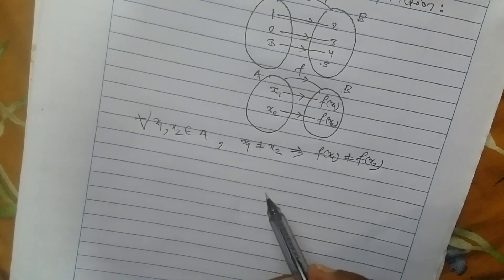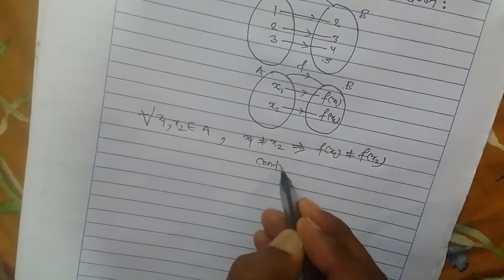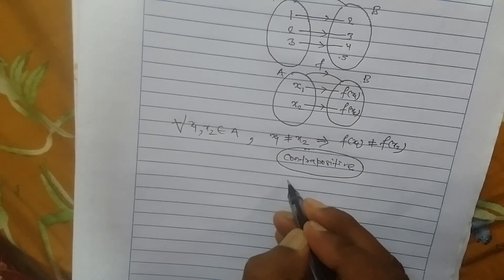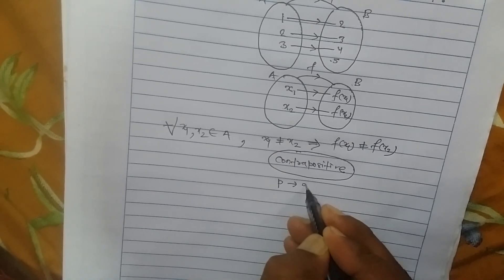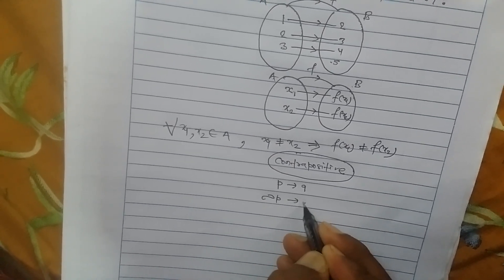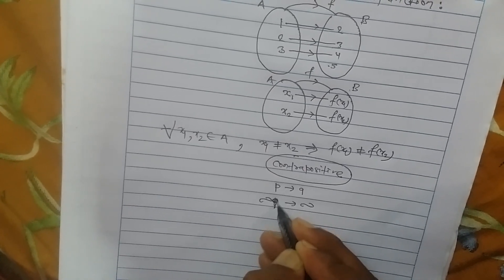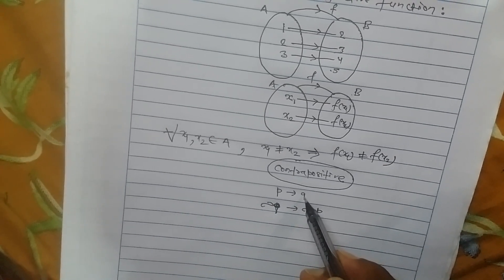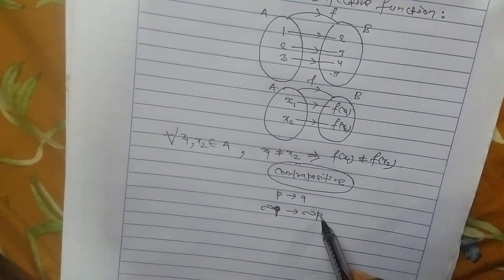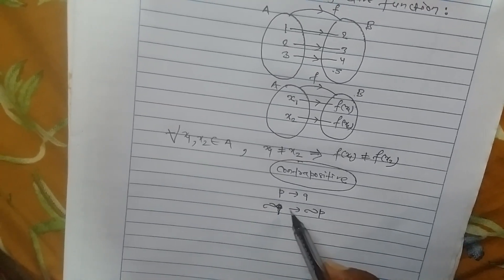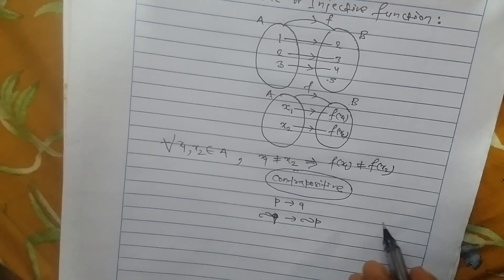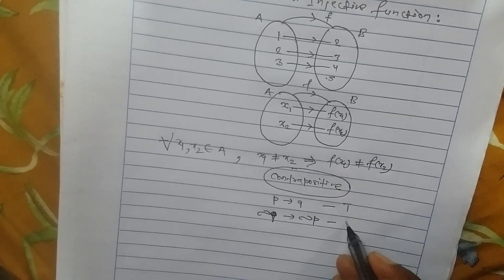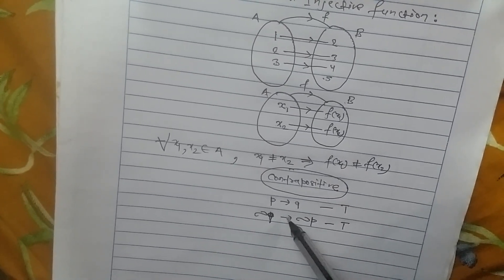Now let us recall the contrapositive. In symbolic logic, the contrapositive of the statement p implies q is: negation of q implies negation of p. To take the contrapositive means to interchange the two statements — the right-hand side statement is kept on the left and the left-hand side statement is kept on the right — and negation should be taken. We also studied that if p implies q is true, then its contrapositive, negation of q implies negation of p, is also true. The contrapositive of a true statement is always true.